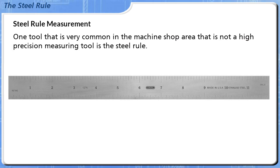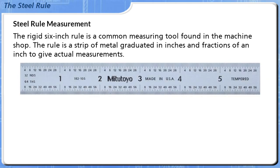One tool that is very common in the machine shop area that is not a high-precision measuring tool is the steel rule. The rigid 6-inch rule is a common measuring tool found in the machine shop. The rule is a strip of metal, graduated in inches and fractions of an inch, to give actual measurements.